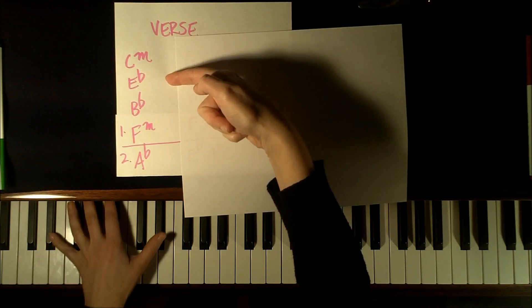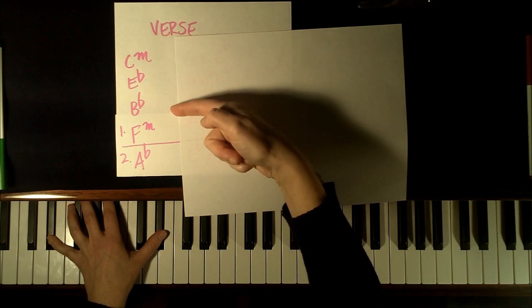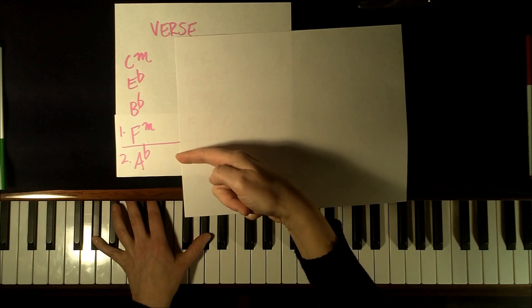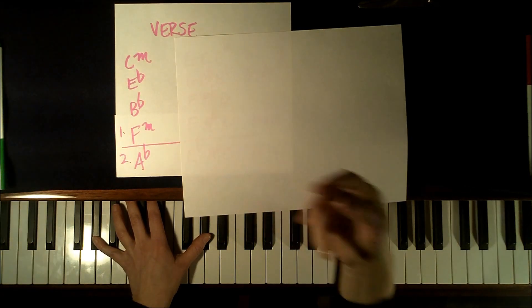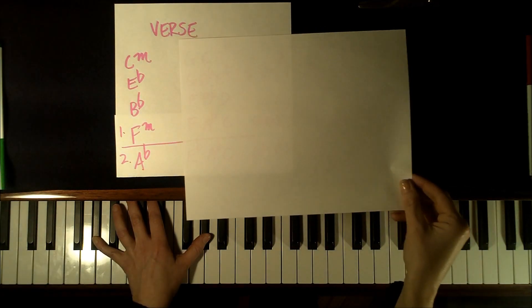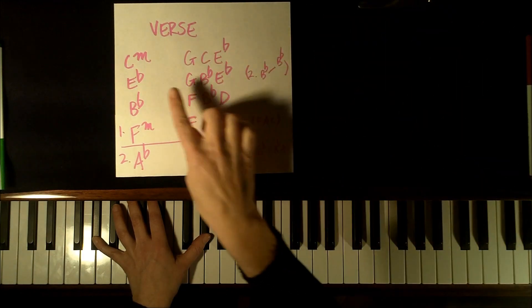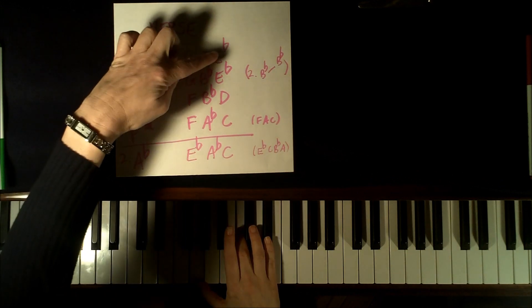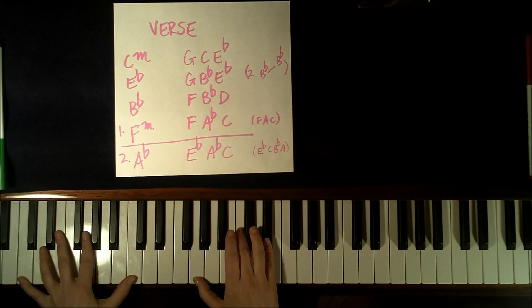Eb again, Bb. Second time, we go to Ab. So this is the chord progression for the verse, and what I'm playing in the right hand is just the notes from the chords. So the C minor chord is going to have G, C, and Eb, and this just holds.